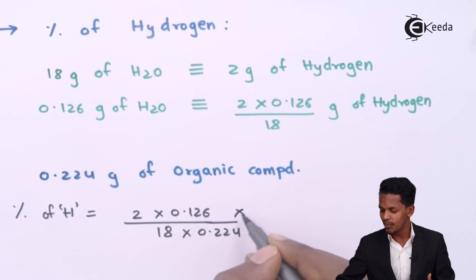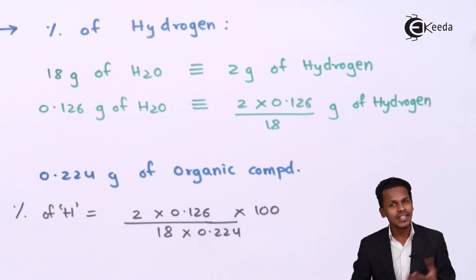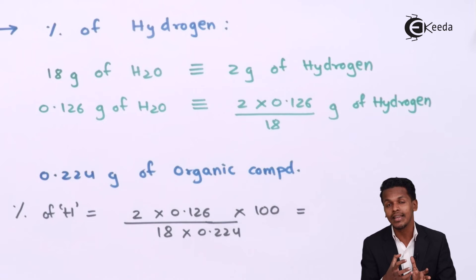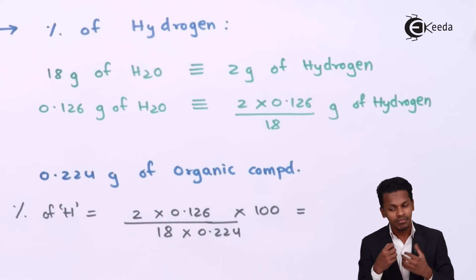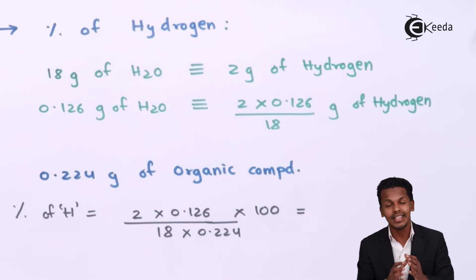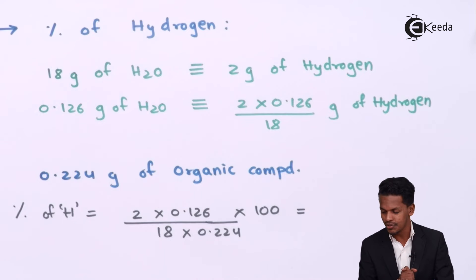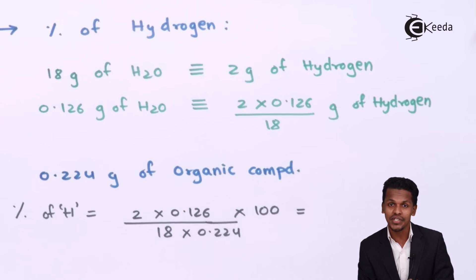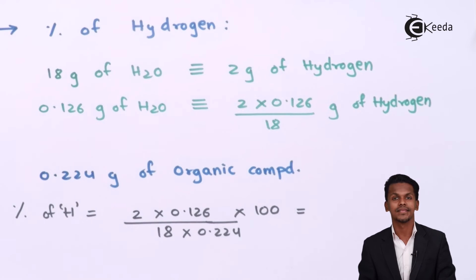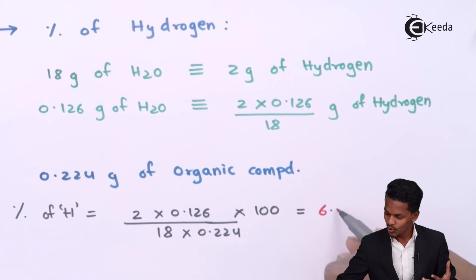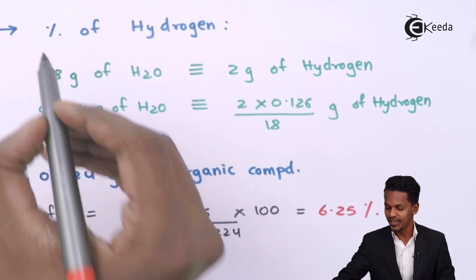We multiply by 100 to get the percentage. This is how we theoretically calculate the percentage of hydrogen. On computing this, the percentage of hydrogen we get is 6.25%.